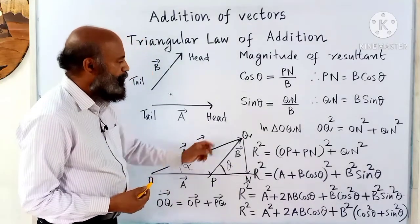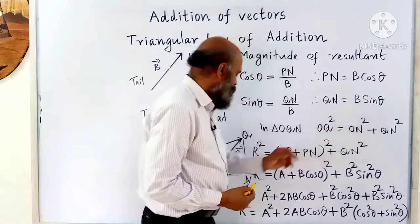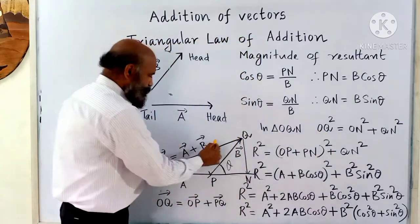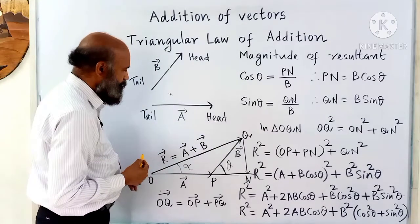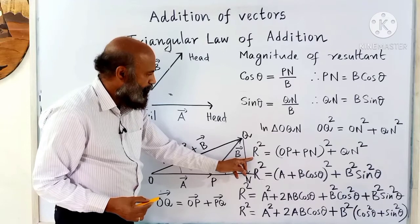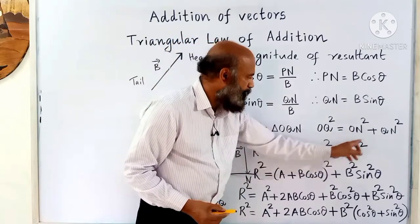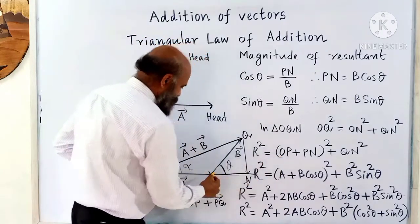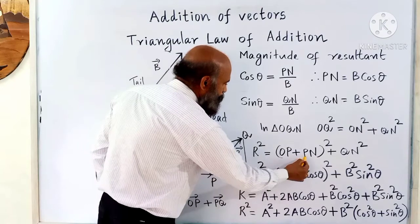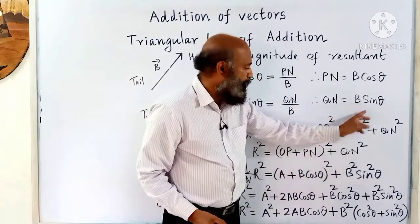In triangle OQN, apply Pythagoras theorem: OQ squared equals ON squared plus QN squared. ON can be written as OP plus PN. OQ is the magnitude of the resultant r, so r squared equals (OP + PN) squared plus QN squared. OP is the magnitude of vector a, so r squared equals (a + b cos theta) squared plus (b sin theta) squared.